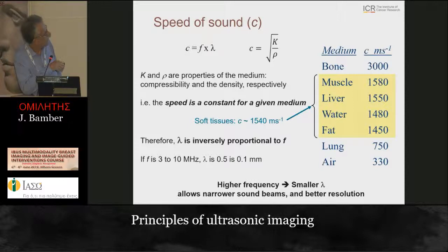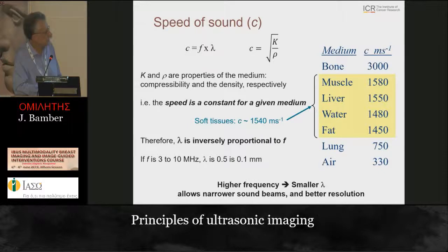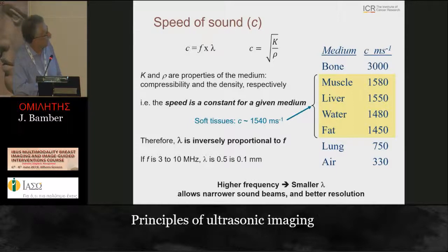From the equation, wavelength is inversely proportional to frequency. The higher the frequency, the shorter the wavelength, and that's important for resolution - it's why higher frequencies give better resolution, because smaller wavelengths can be focused more easily. If frequency is 3 to 10 megahertz, the wavelength is of the order of 0.5 to 0.1 millimeters. The higher the frequency, the smaller the wavelength, allowing narrower sound beams and better resolution.